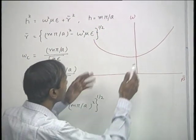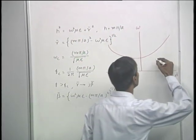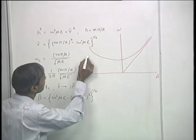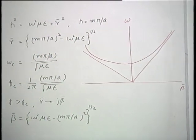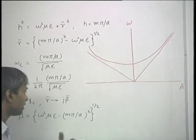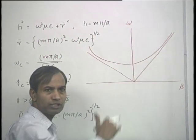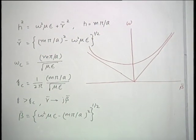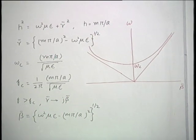If we plot the omega-beta diagram for a wave propagating in an infinite medium with the same mu and epsilon, those are simply straight lines. As frequency increases, the omega-beta diagram for the parallel plane guide for TE or TM modes asymptotically approaches that of the infinite medium. As frequency decreases, the greater effect of confinement due to the parallel plane guide becomes evident. This frequency is omega-c, the cutoff frequency.